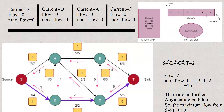So 10 is the maximum flow. The augmenting paths found were: S→A→B→T, S→A→C→T, S→D→A→C→T, and S→D→C→T.